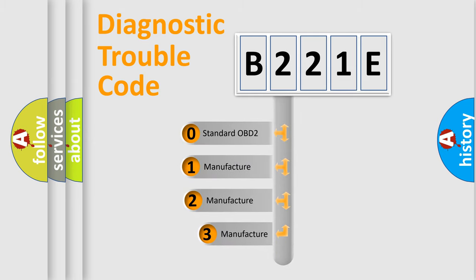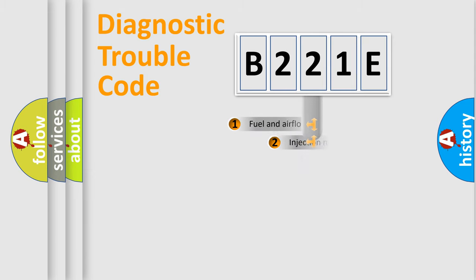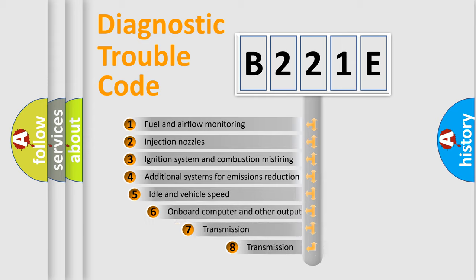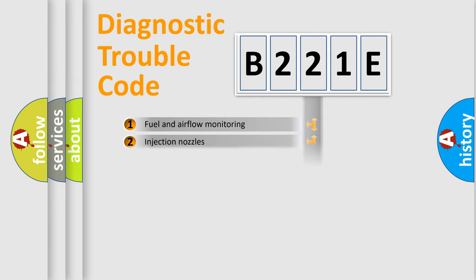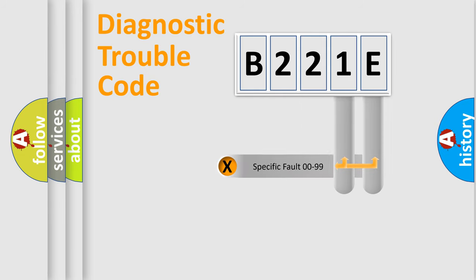If the second character is expressed as zero, it is a standardized error. In the case of numbers 1, 2, or 3, it is a more prestigious expression of the car specific error. The third character specifies a subset of errors. The distribution shown is valid only for the standardized DTC code.